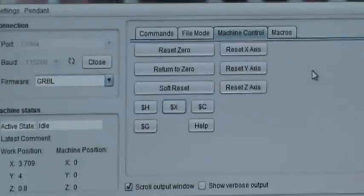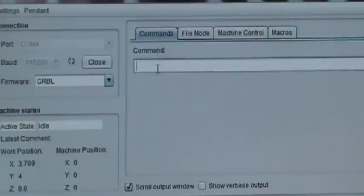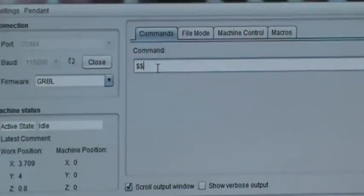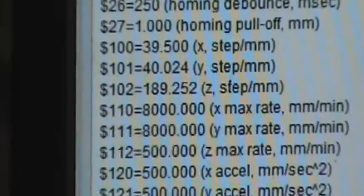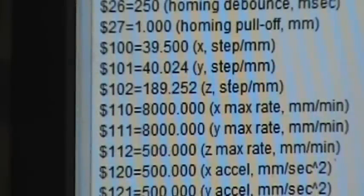Okay, here's Universal G-code Sender. I'm going to start off by clicking on the Commands tab, and then I'm going to issue a dollar sign dollar sign command and then hit Enter.